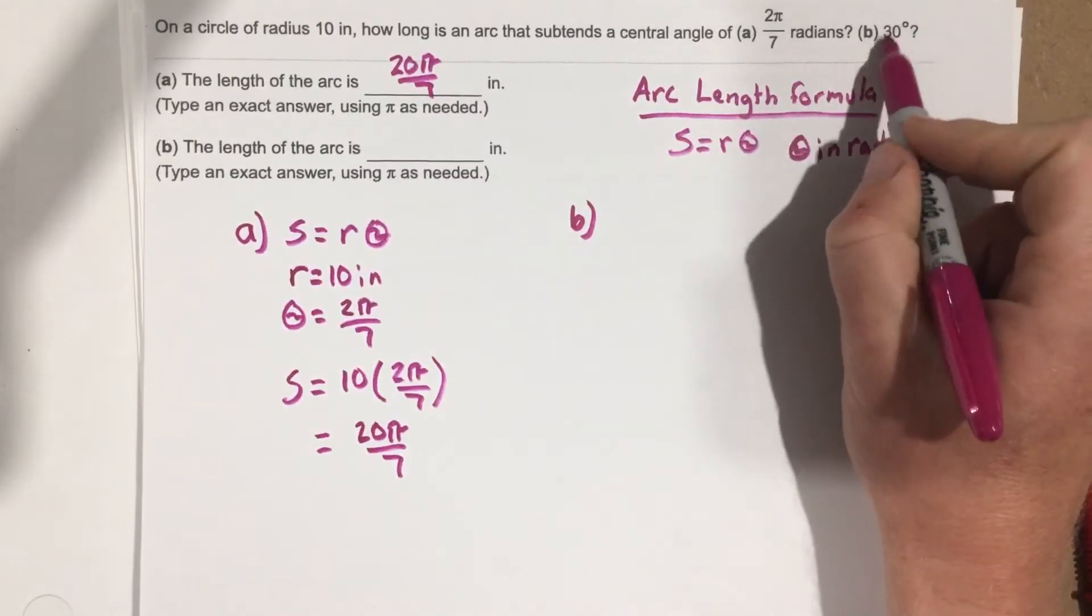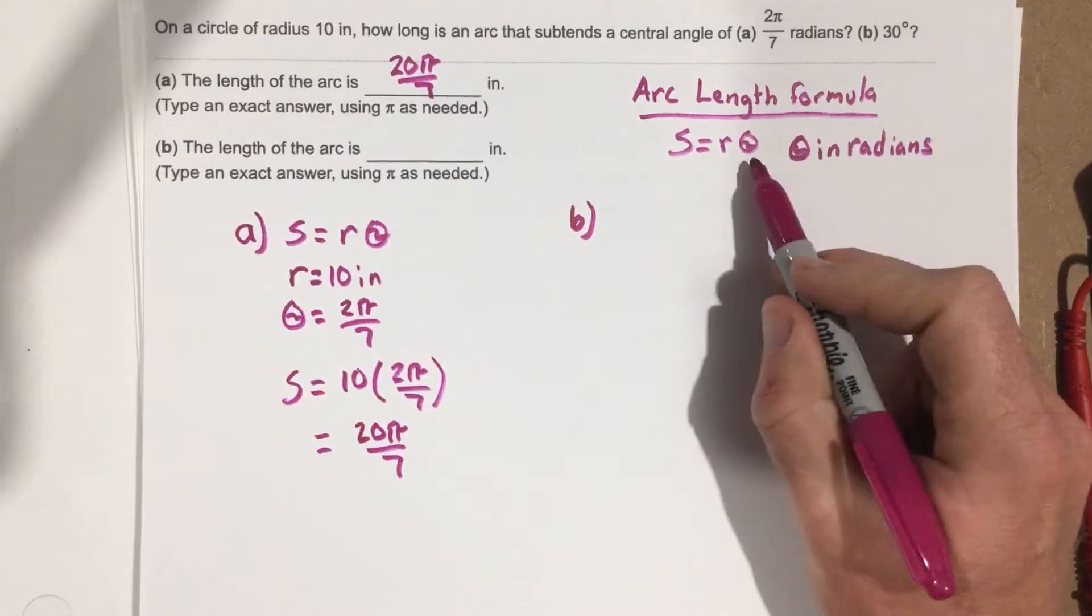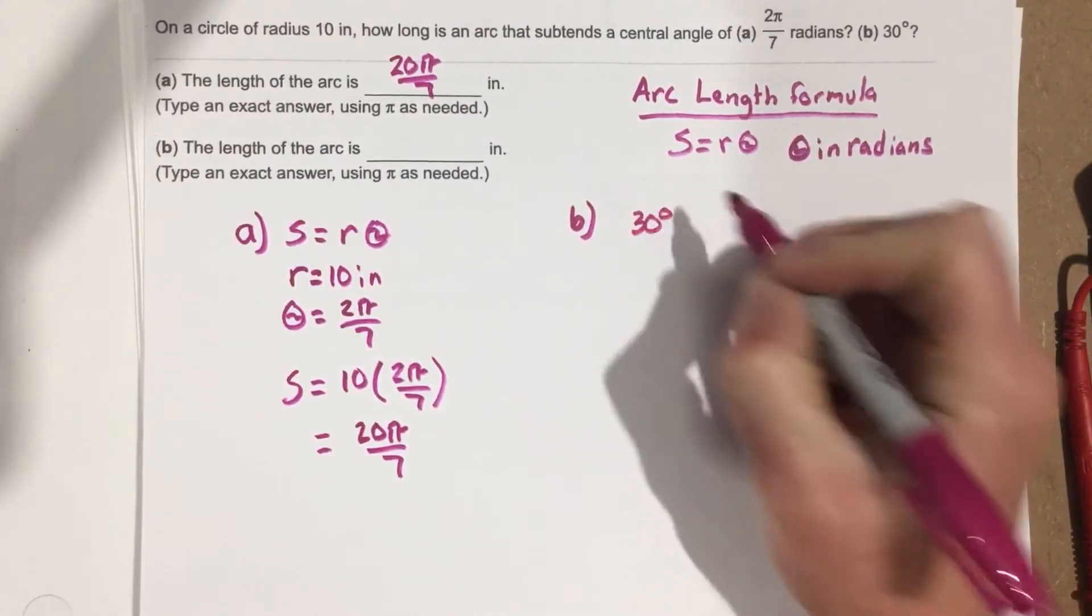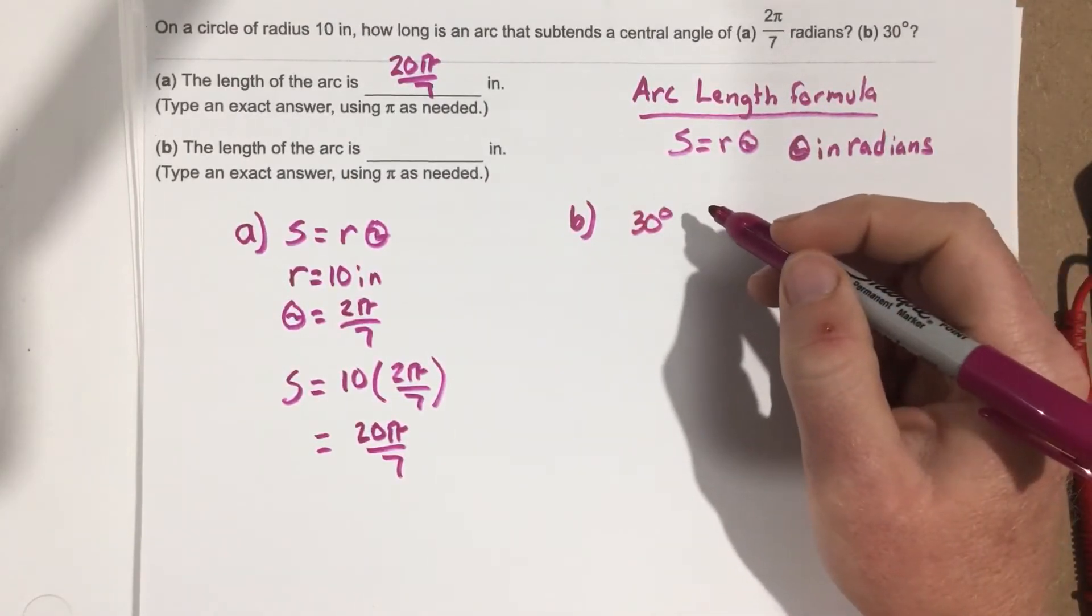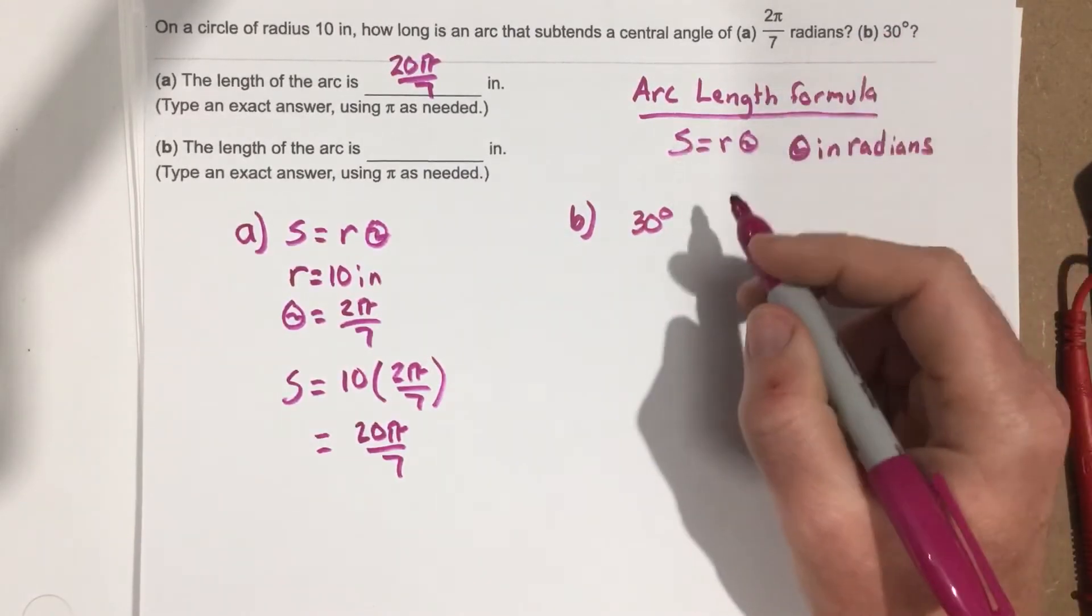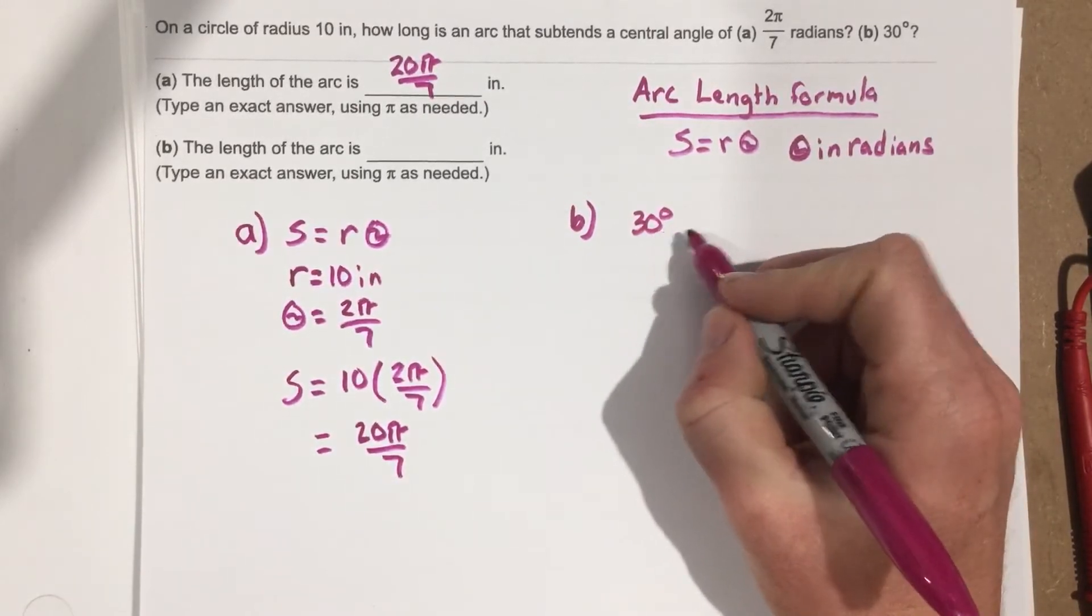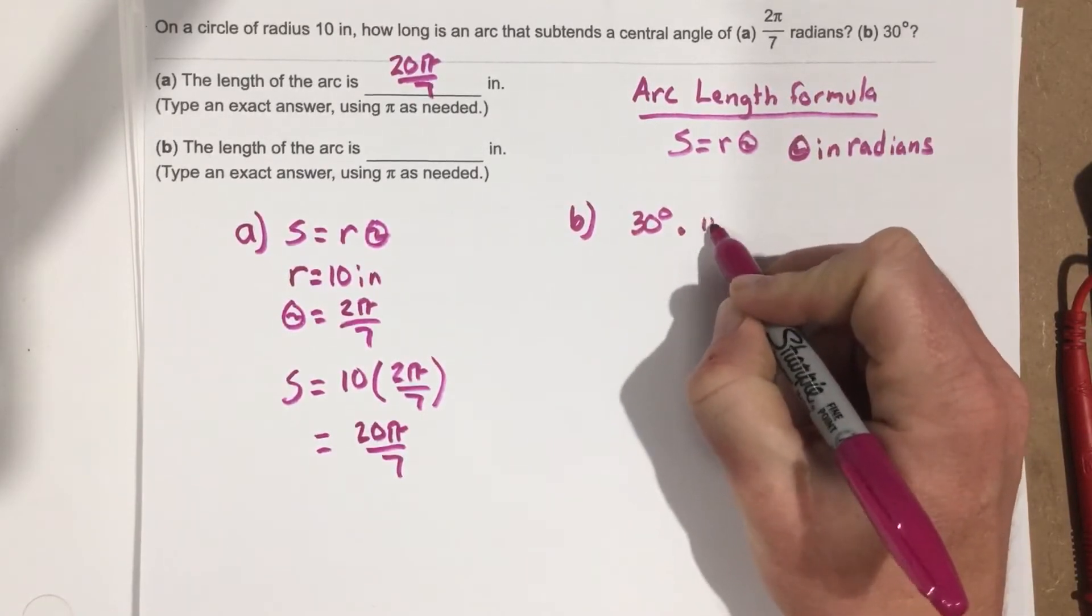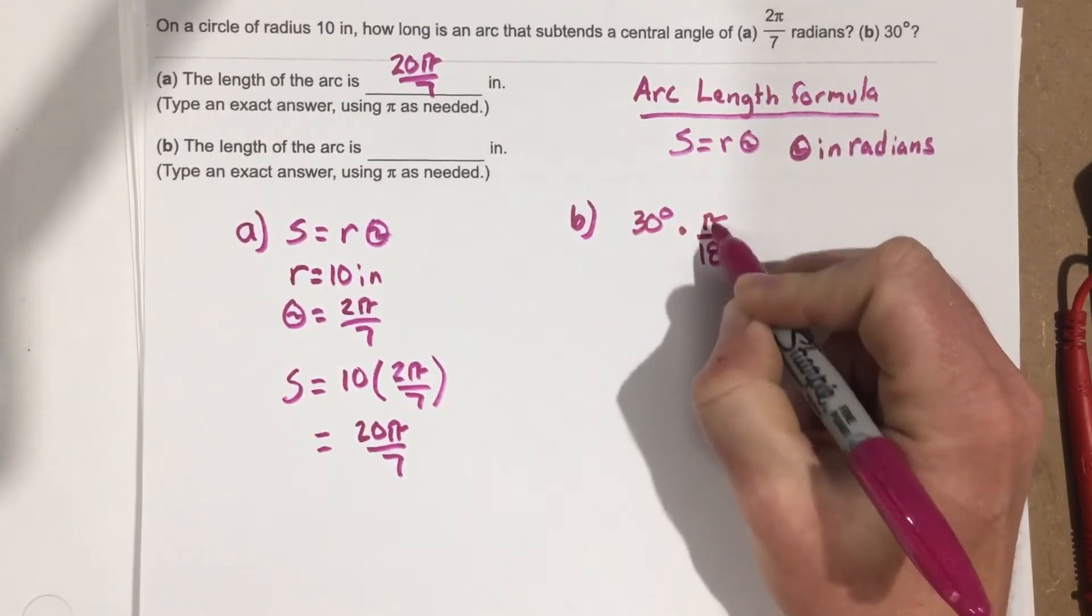Well, because 30 degrees is not in radians, and we need radians for S equals R theta, we're going to first take 30 degrees and multiply it by a ratio between the degrees and radians. And we know that there are 180 degrees for π radians. So if we want to convert this to radians, we're going to multiply this by π over 180 degrees, because this is the ratio between radians and degrees.